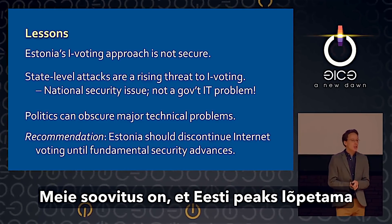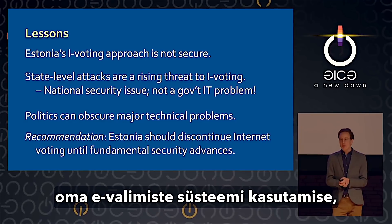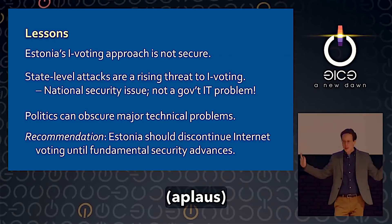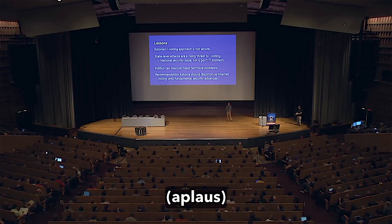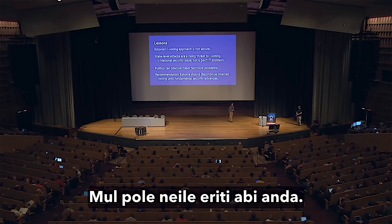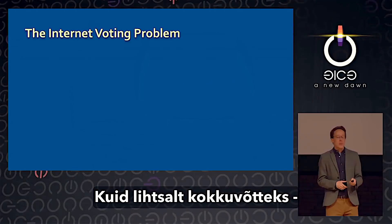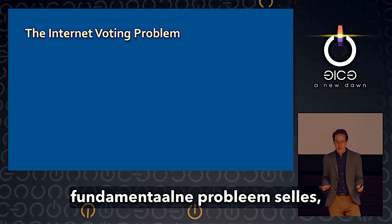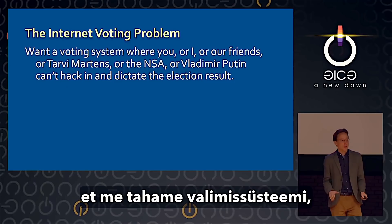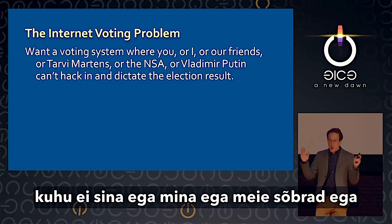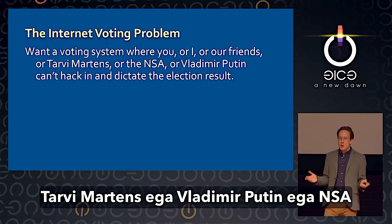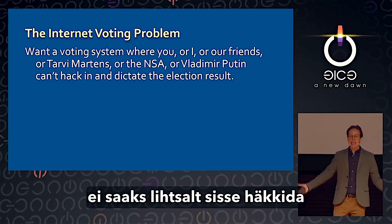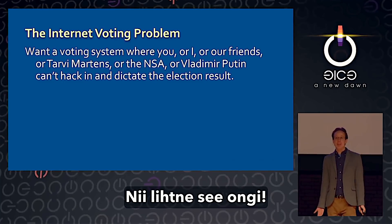Our recommendation is that Estonia should discontinue their internet voting system until their fundamental security advances. To conclude: we want voting systems where you, me, our friends, Tarvey Martins, Vladimir Putin, or the NSA can't just hack in and change the election outcome. It's as simple as that — we want democracy. Major fraud needs to be at least as hard as it is on paper, and no technology so far can assure that.